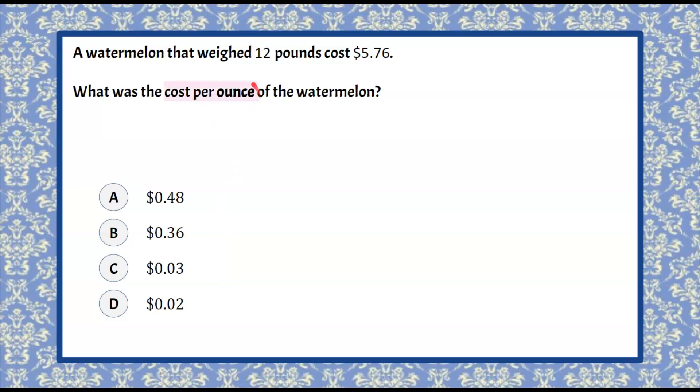So we're finding the cost per ounce of a watermelon, and we're told that 12 pounds was $5.76. Now I want to point out that we have ounce in what we're being asked for an answer, and we're given this in pounds. So on a reference sheet that you should have been given when you take any test, one pound is equal to 16 ounces. So we're going to use this conversion ratio when we solve this problem.